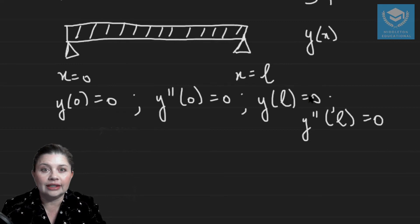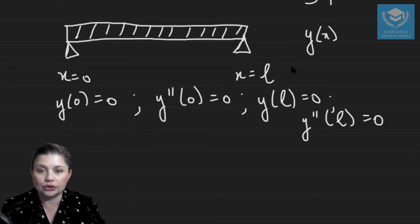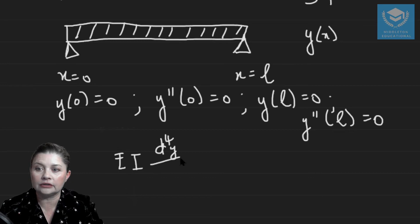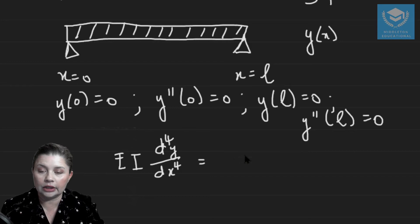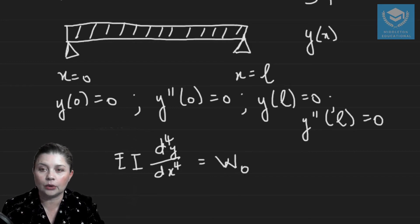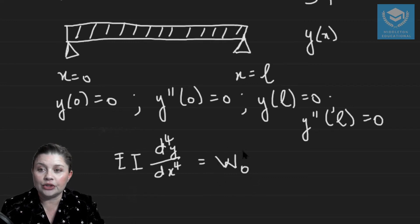Because you have information about the load, the following differential equation holds true: the fourth derivative of deflection is equal to your load. Here our load is just W₀ divided by EI because you have a uniform load across the entire beam.